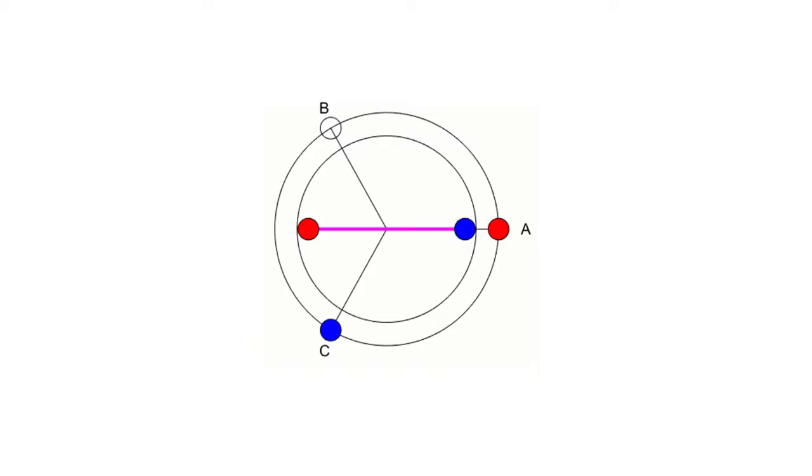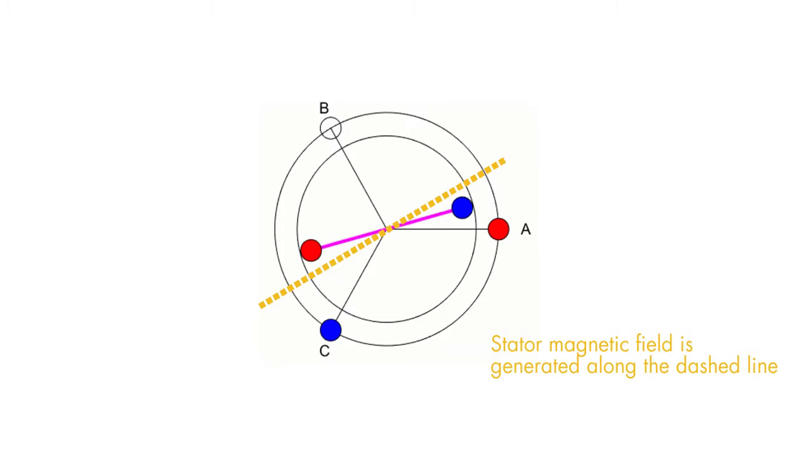Applying voltage across two phases A and C generates a combined magnetic field along the dashed line. As a result of this, the rotor now starts to rotate to align itself with the stator magnetic field as seen in this animation.